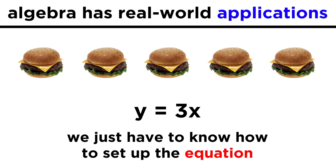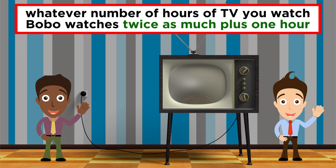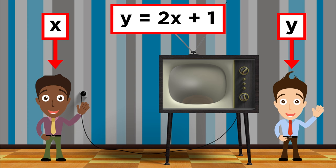The trick is just knowing how to set up the equation. Let's say that you love to watch TV, but not as much as your friend Bobo. However many hours of TV you watch in a day, Bobo watches twice as much, plus an additional hour. Well if you watch x hours of TV, and Bobo watches y hours of TV, we can relate x and y with an equation, just like we did for the burgers, where y equals 2x + 1. Whatever you watch, which is represented by x, we double it and add one to get y, the amount Bobo watches.